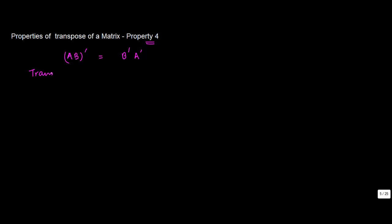transpose of product of two matrices A and B is equal to product of transpose of B and transpose of A.